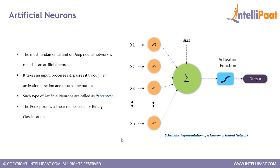Perceptrons are basically like a linear model used for binary classification. As the figure shows, we have inputs x1, x2, x3, up to xn in the input layer, to which we add weights and bias that are randomly selected — w1, w2, w3 up to wn. We multiply these weights with the corresponding inputs, add all the values together, then add the bias. This final sum is passed through an activation function, which gives us the output.